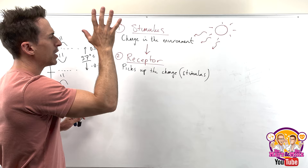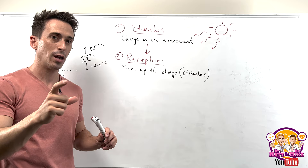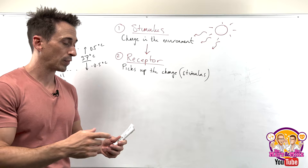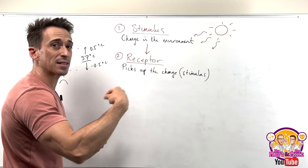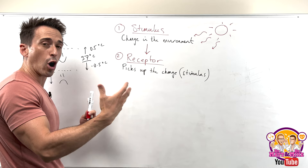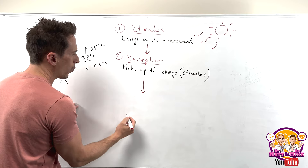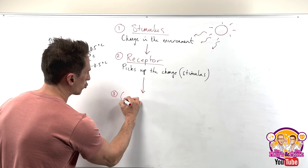What needs to happen is the receptor needs to transduce — it needs to turn that stimulus, whatever it may be, into an electrical chemical signal. So the receptor picks up the change, transduces it, and then sends it somewhere — either via the nervous system or through the endocrine system. And where is it sending it? It's sending it to the third part of homeostasis: the control center.